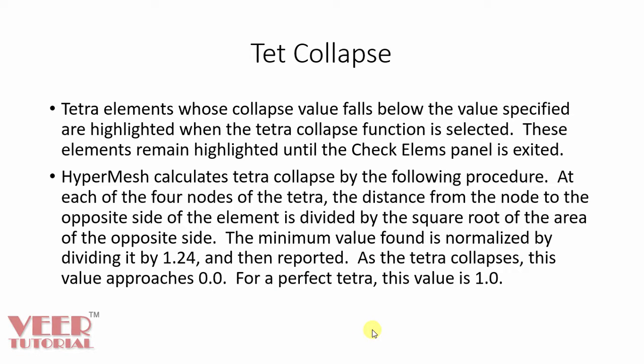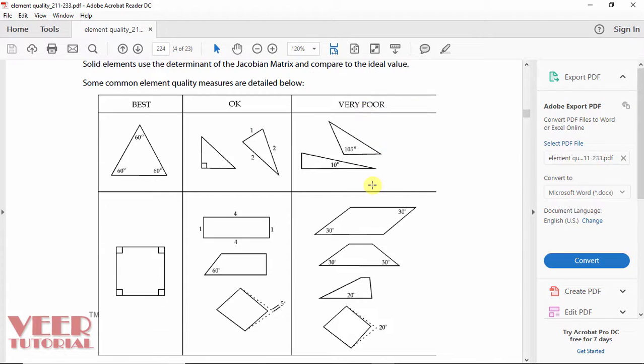Then we have tet collapse. So tet collapse is used in case of 3D mesh. So we will cover it later when we work on the 3D meshing. So when we create the mesh, we have tria element and quad element.